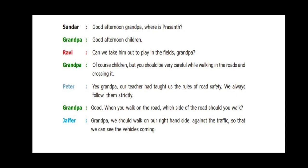The characters in this section are Sundar, Grandpa, Ravi, Peter, and Jaffa. Sundar wishes Grandpa and asks for Prashant. Ravi asks if they can take him out to play in the fields. Grandpa says of course, but they must be very careful while walking and crossing the road. Peter confirms their teacher taught them road safety rules and that they follow them strictly. Grandpa asks which side of the road they should walk on. Jaffa replies they walk on the right-hand side against the traffic so they can see the vehicles coming.